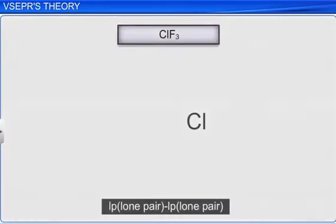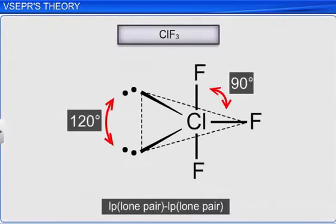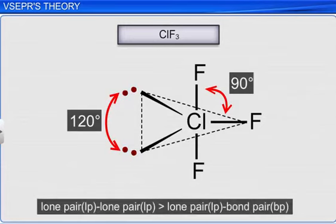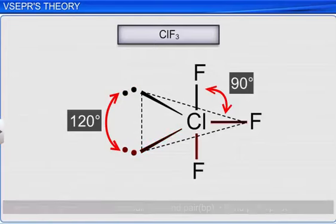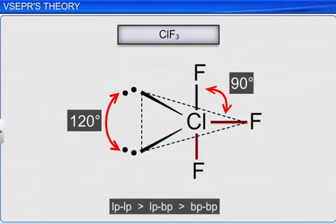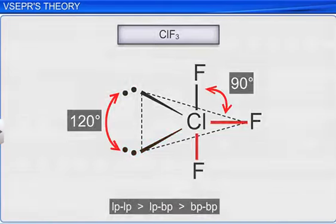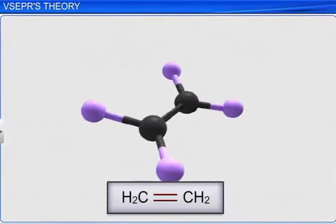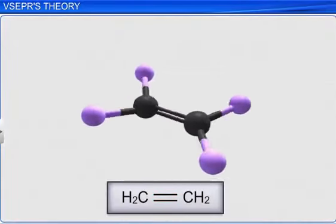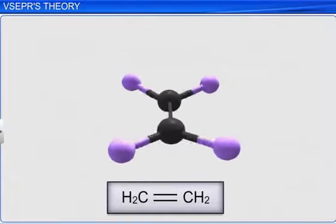In a molecule, the repulsion between lone pairs of electrons is always maximum. Thus, the repulsion between two lone pairs is more than that of a lone pair and a bond pair, which is greater than that of two bonded pairs. A multiple bond should be assumed to be a single electron pair. Therefore, the presence of multiple bonds will not affect the shape of a molecule.